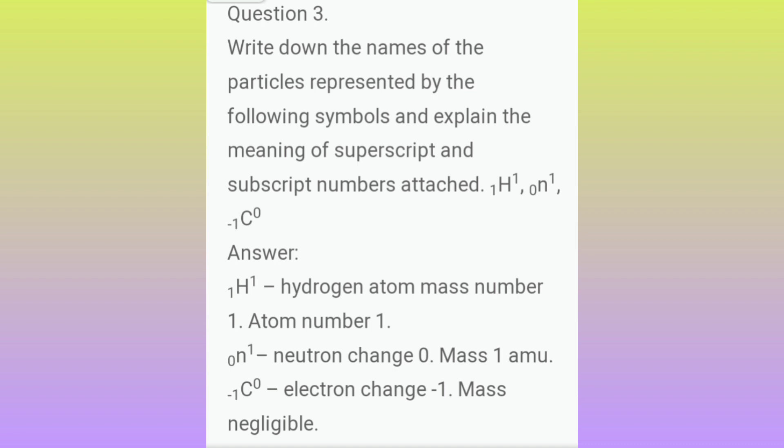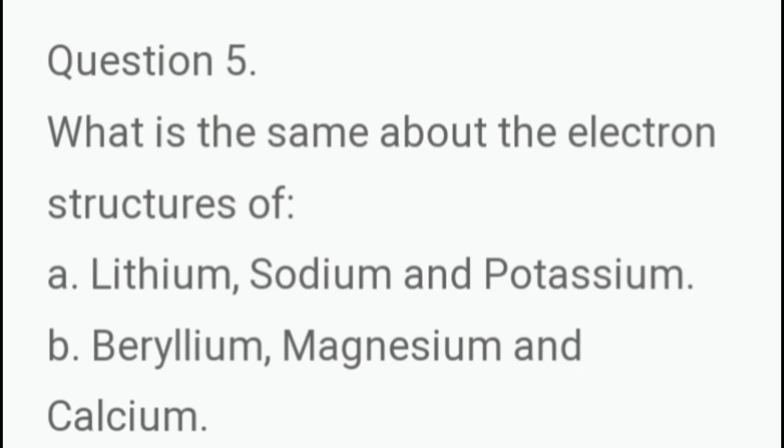Answer. Atomic number 1. H mass number 1. Hydrogen atom mass number 1. Atom number 1. 0 N mass number 1. Neutron charge 0. Mass 1 AMU. Then atomic number 1. E mass number 0. Electron charge 1. Mass negligible.